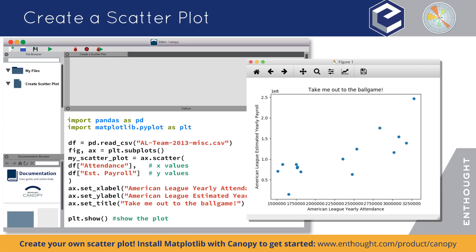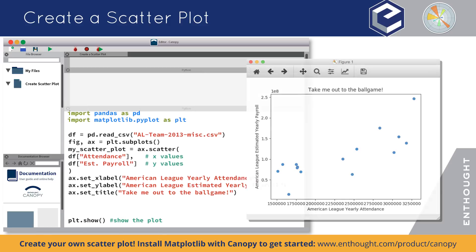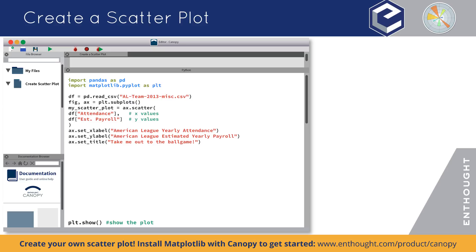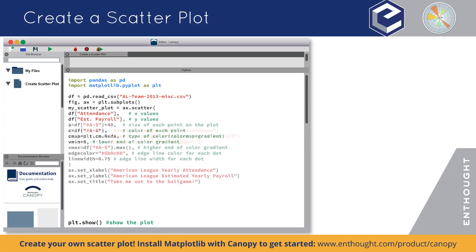Let's try something a little more advanced to showcase some of the power and flexibility Matplotlib offers. We can make the plot more informative by using the size and color of each dot to represent the number of all-stars on the team.